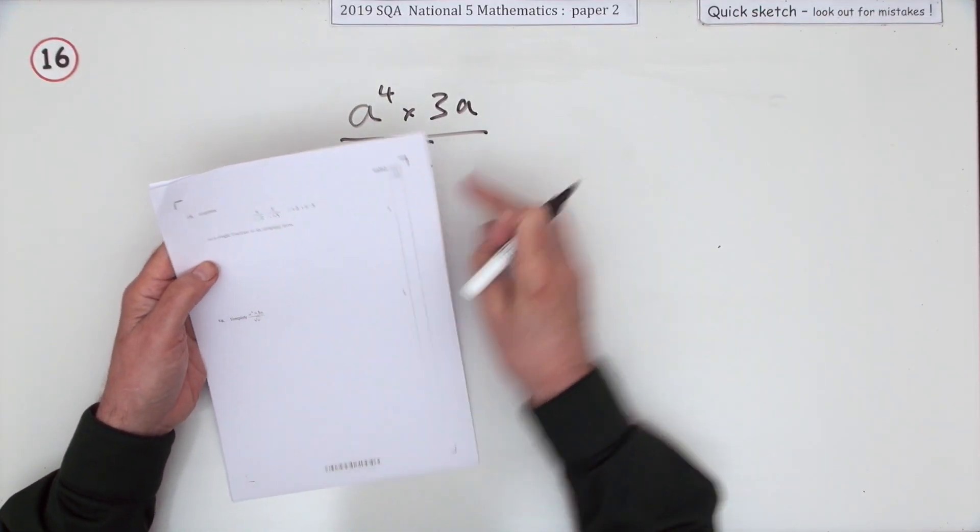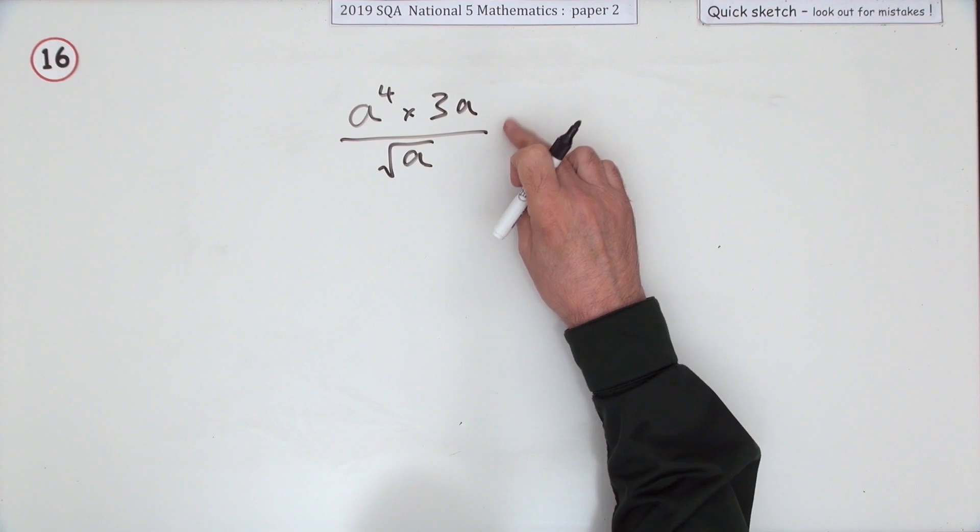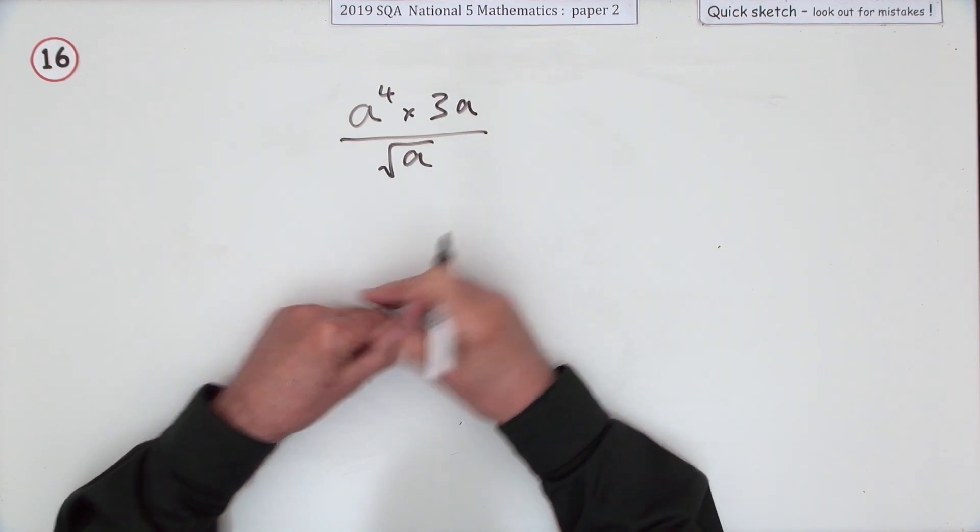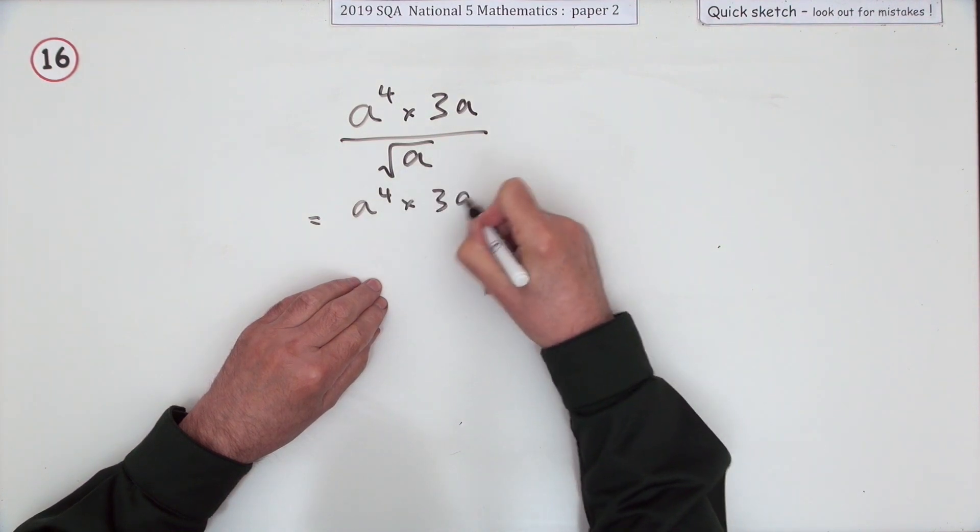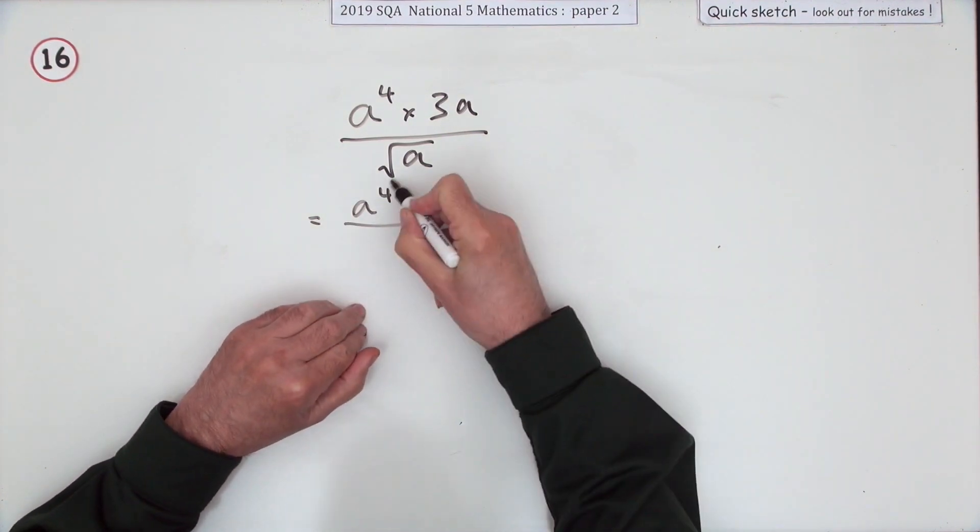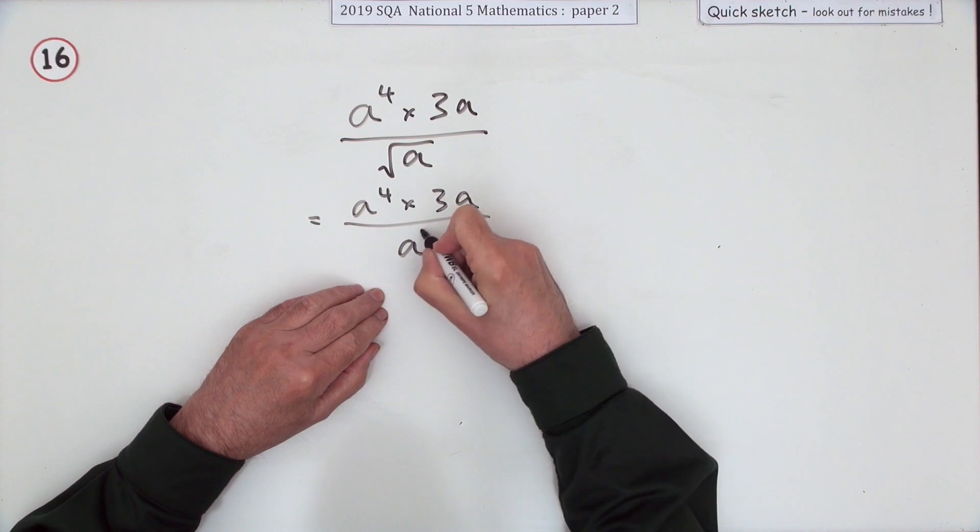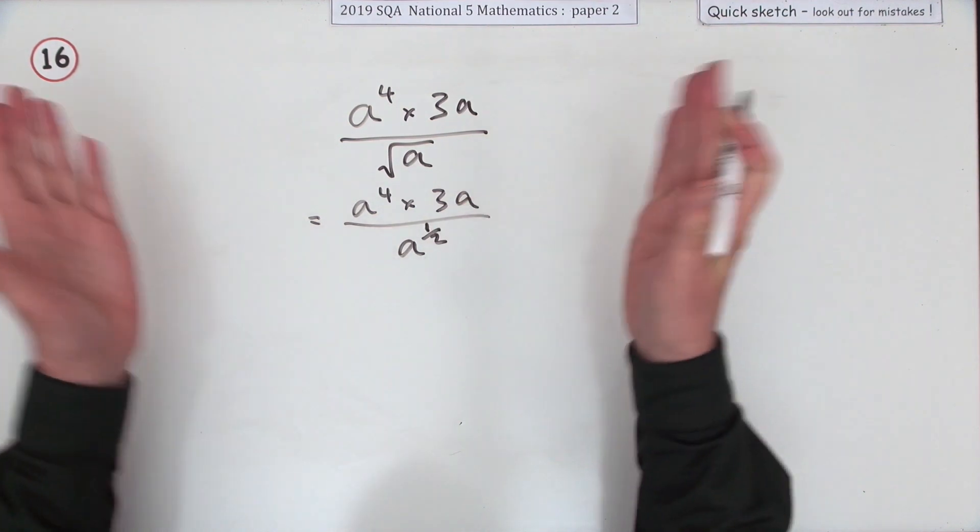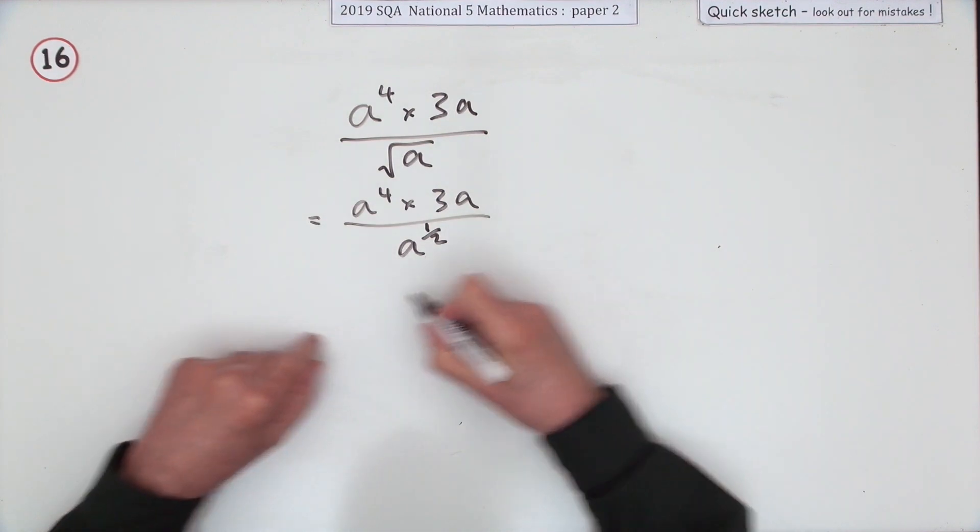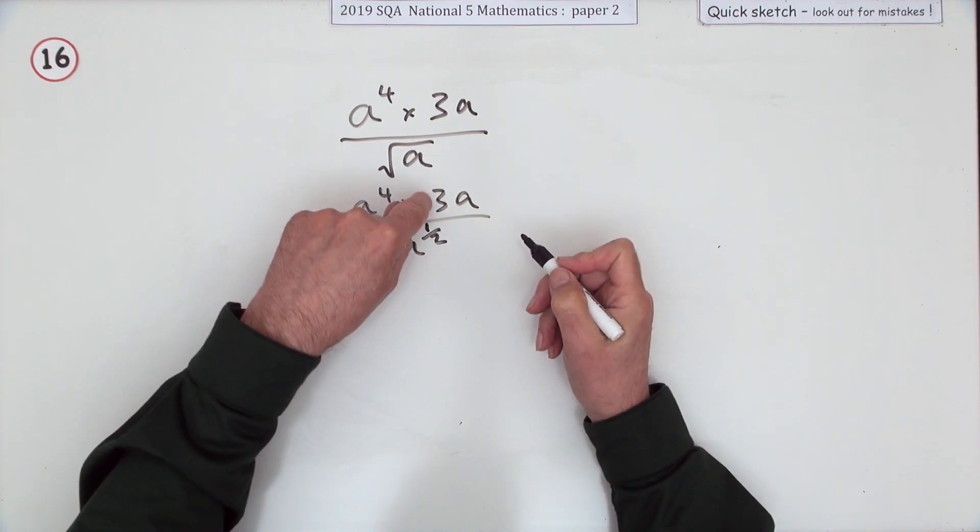Number 16 then. Let's just simplify this expression. It's an indices question. The first thing we'll do is write it in index form first of all. So the square root of a is a to the power a half - power on top, root underneath.